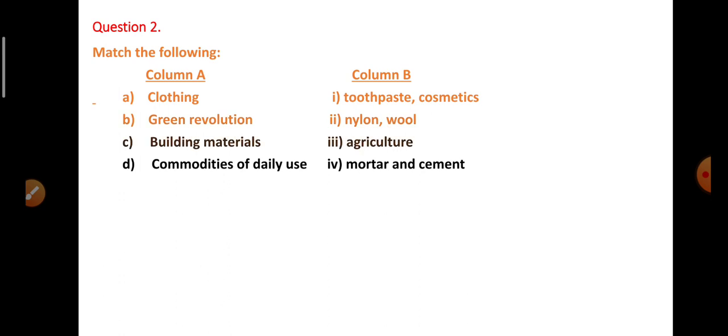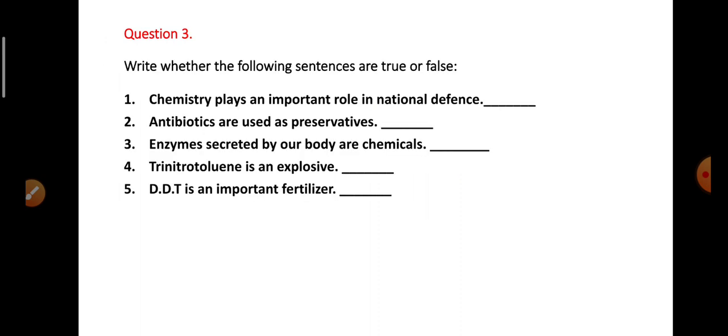Third bit in column A is building materials, third bit in column B is agriculture. Fourth bit in column A is commodities of daily use, fourth bit of column B is mortar and cement. Question number three: Write whether the following sentences are true or false.